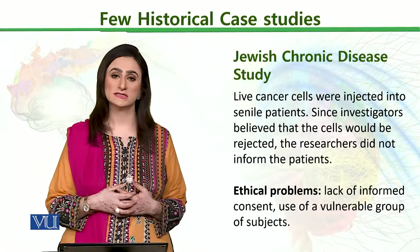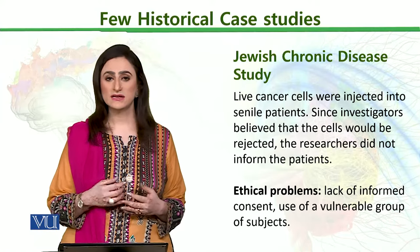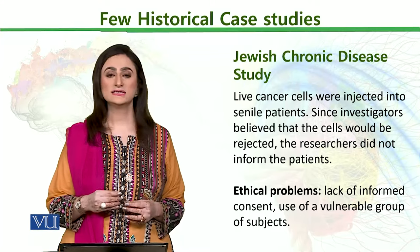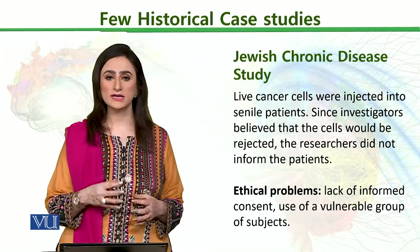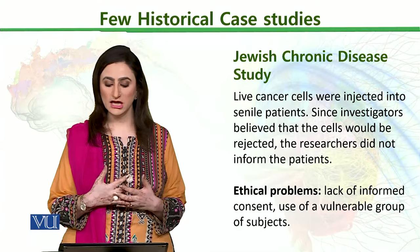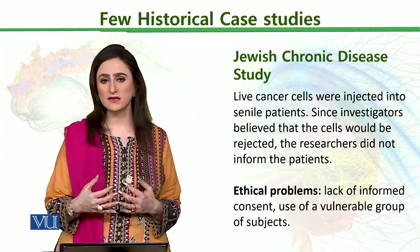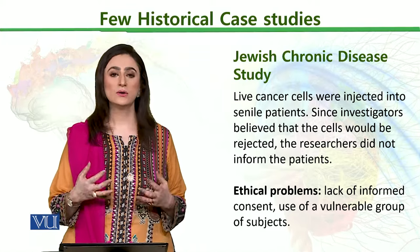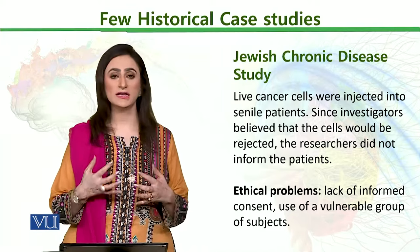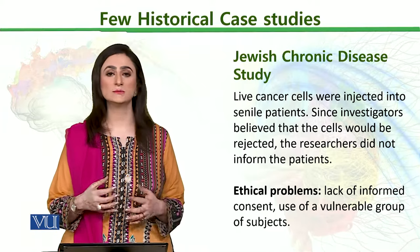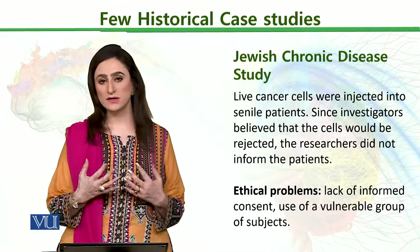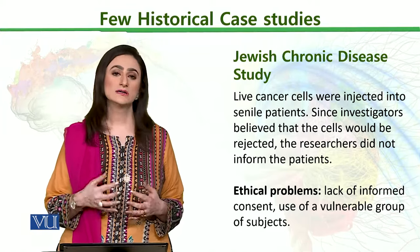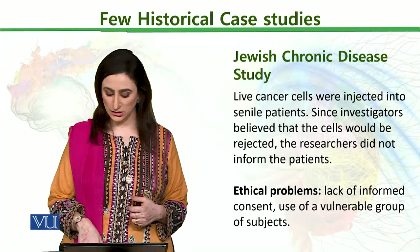Then the Jewish Chronic Disease study — this is another important classical case study in which live cancer cells were injected into saline patients who were from a very old age population. Researchers believed that these cells would be rejected, but still they attempted that with the old age population. Without informed consent, they carried out this kind of procedure and used a vulnerable group of individuals. So that experiment is also a classic case study which is still questionable.